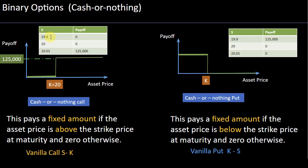If your underlying is even slightly lower, like $19.90, you still get a zero payoff. And even if you are exactly at $20, your payoff is still zero. That's quite a key concept when talking about a cash-or-nothing binary option.